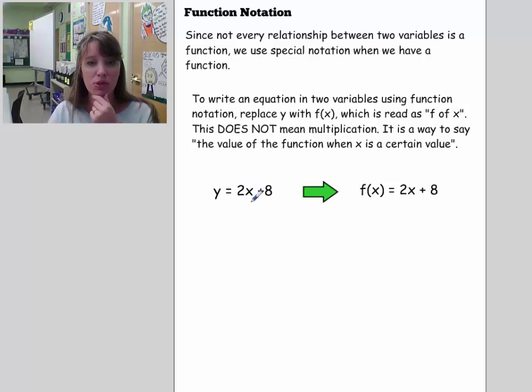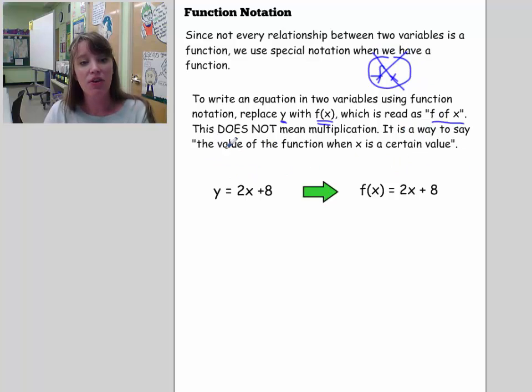To write an equation in two variables using function notation, we're going to replace the variable y with f(x), which is read as 'f of x.' It's always a lowercase f with open parentheses and an x inside of it. This does not mean multiplication. It's not f times x. That is not what it is.